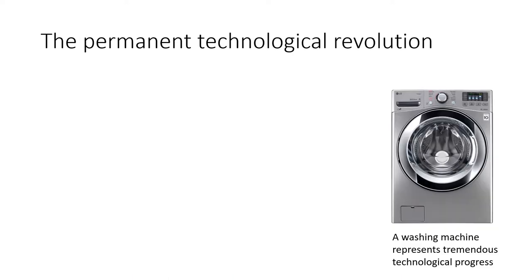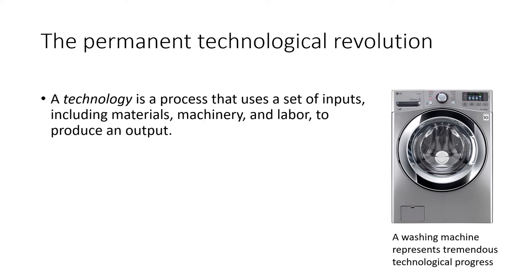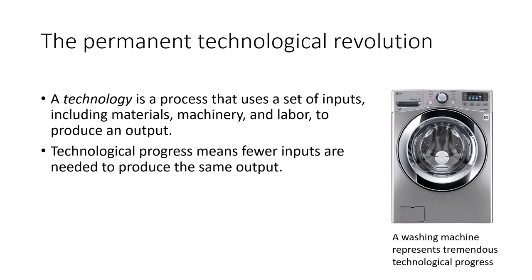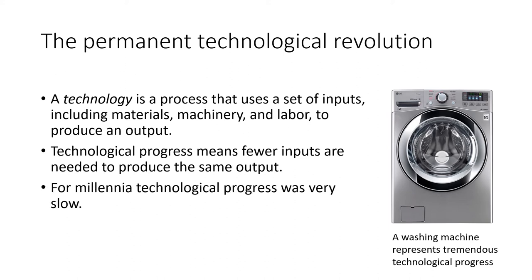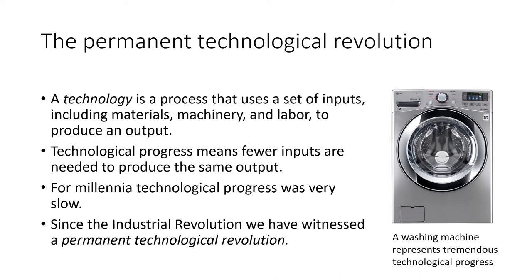What we're going to call that in this course is the permanent technological revolution. In economics, a technology is a process that uses a set of inputs — including materials, machinery, and labor — to produce an output. Technological progress means we require fewer inputs to produce the same output. For millennia, technological progress was very slow. But since the industrial revolution, we have witnessed a permanent technological revolution: we consistently find ways of doing things with fewer inputs.